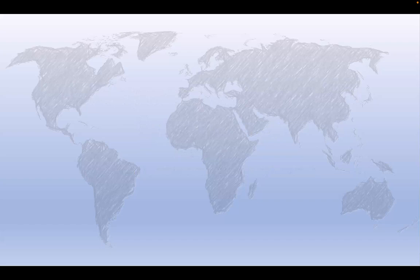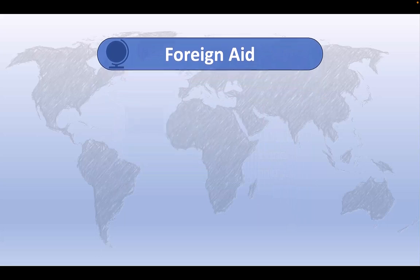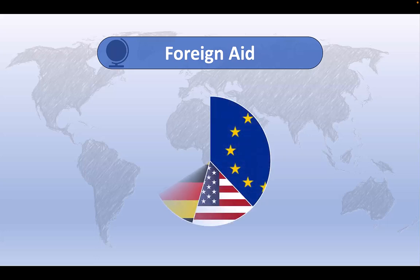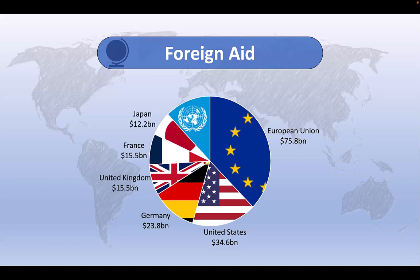In the simplest terms, foreign aid refers to the financial, technical, or material assistance voluntarily provided by one country to another. Most developed countries provide foreign aid as part of their broader foreign policy strategies. When measured by total value, the world's largest donors include the European Union, which provides more than $75 billion in official development assistance annually, followed by the United States at about $35 billion a year, Germany at about $24 billion a year, the United Kingdom and France at about $15 billion a year each, and Japan at just over $12 billion a year.